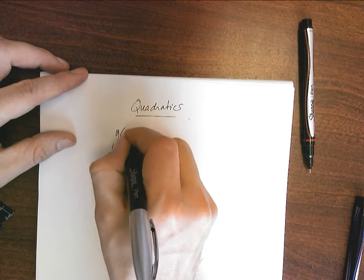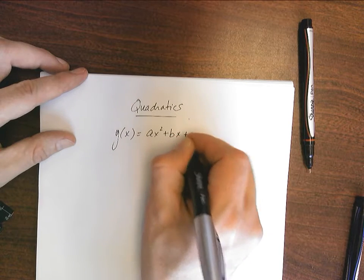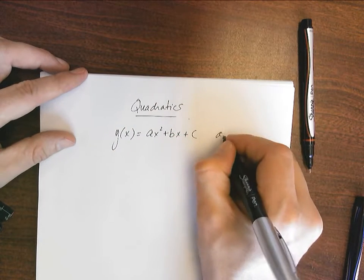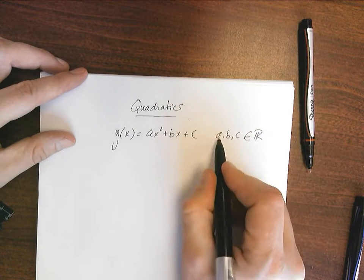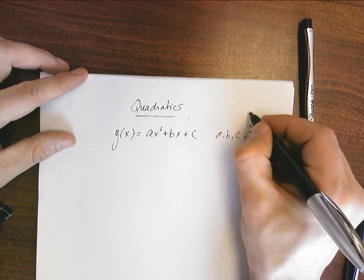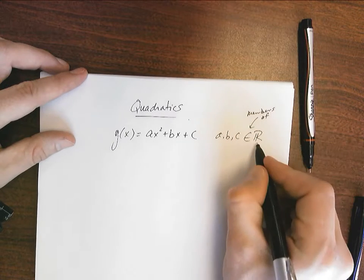A quadratic is anything in this form, g(x) = ax² + bx + c, where a, b, and c are real numbers. What this says is a, b, and c are elements of or members of the real number system.